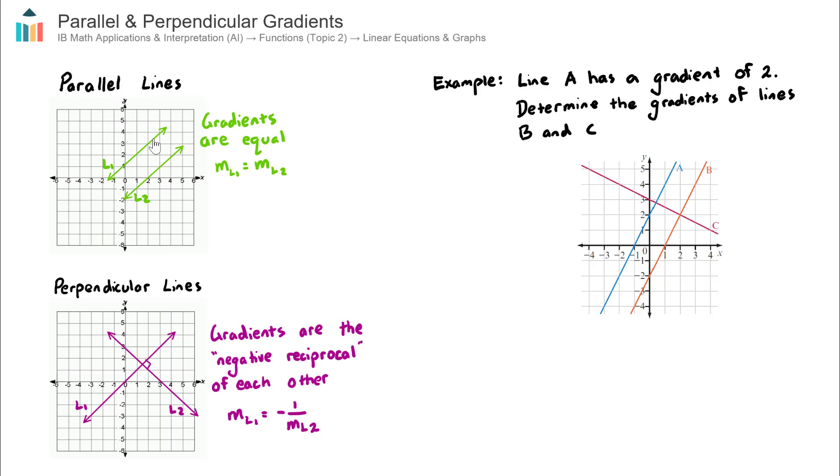The gradient of line 1, let's say it was 2 just for argument's sake, will be the same as the gradient for line 2. So they will also have a gradient of 2.